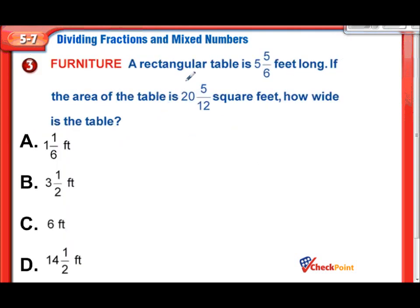Now we have our word problem. A rectangular table is 5 and 5 sixths feet long. The area of that table is 20 and 5 twelfths. How wide is the table? So there's the thing we have to figure out. Area is length times width, but they gave us the area and the length. So it looks like we need to divide to figure this out. Area divided by length to get our width. Here we go.